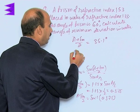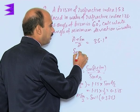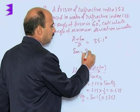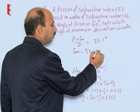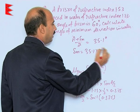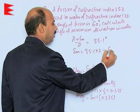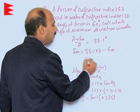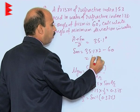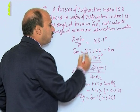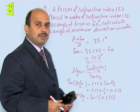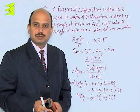So we can write: delta_m = 35.1 × 2 − 60 = 10.2 degrees. This is the angle of minimum deviation.